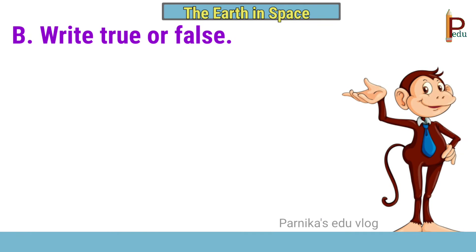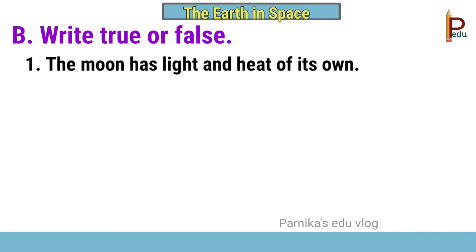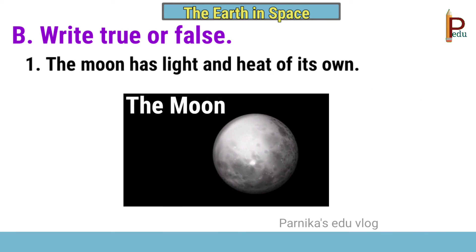Children, let's write true or false. First one, the moon has light and heat of its own. It is a false statement. Like planets, the moon has no light and heat of its own.